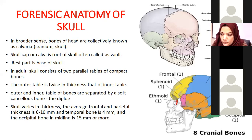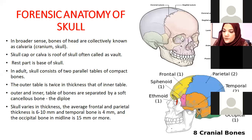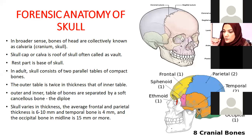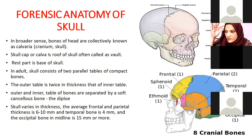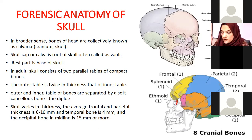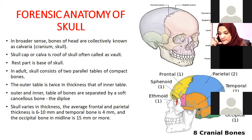In adults, the skull consists of two parallel tables of compact bone. The outer table is twice the thickness of the inner table of the skull vault. The two tables are separated by a soft cancellous bone known as the diploë, which is essentially spongy bone marrow. The thickness of the skull vault varies: the frontal and parietal bones average 6 to 10 millimeters, the temporal bone is 4 millimeters, and the occipital bone in the midline is around 15 millimeters.